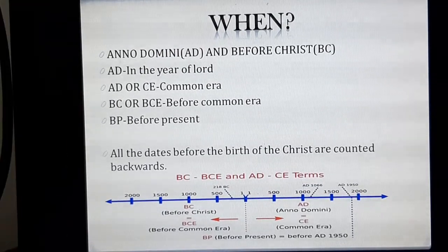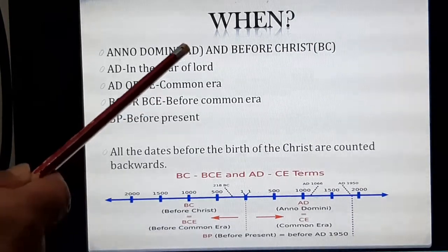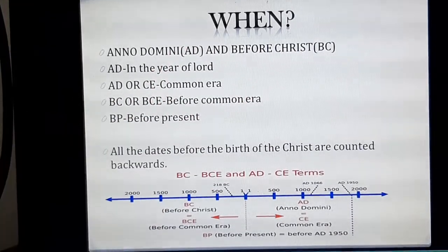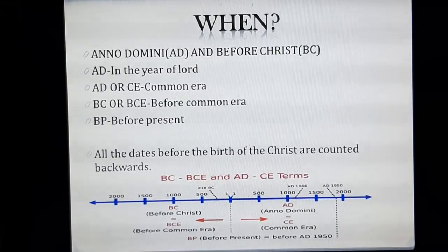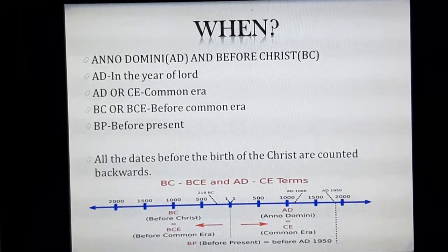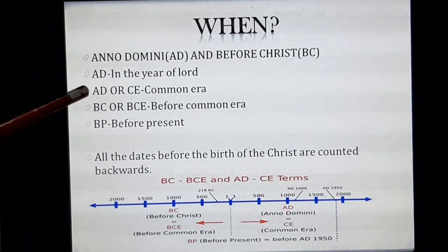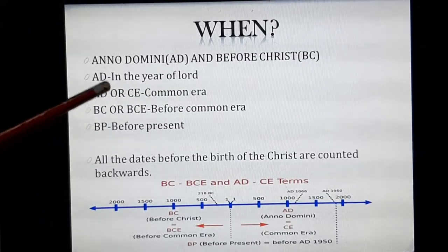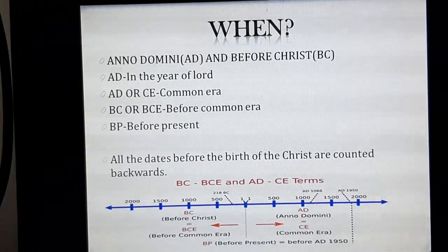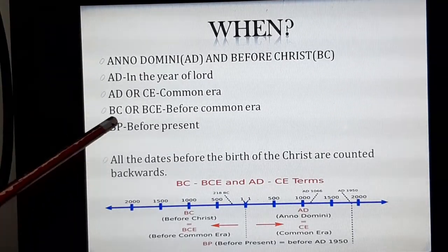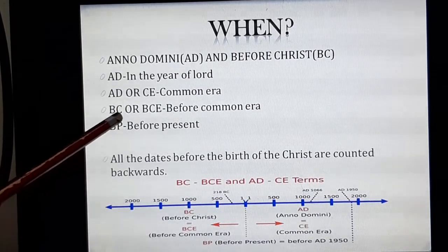So dates — you must have seen in your history books they are always mentioned in AD and BC. Dates in history are expressed in BC and AD. AD is 'in the year of the Lord', or you can say after the birth of Christ, and BC is before the birth of Christ, before the year of the Lord.